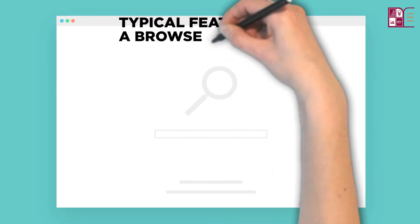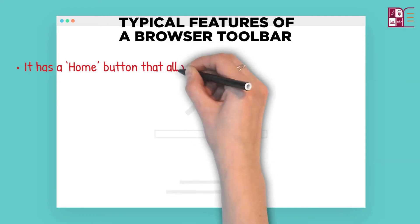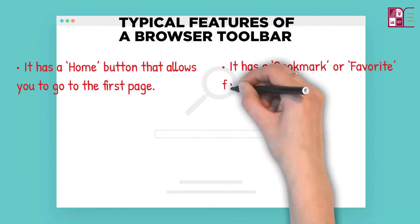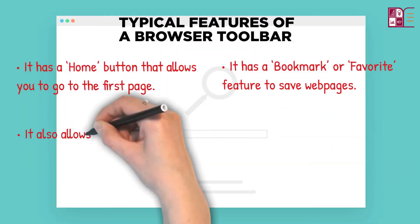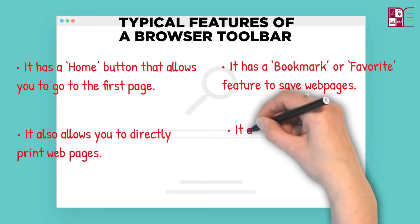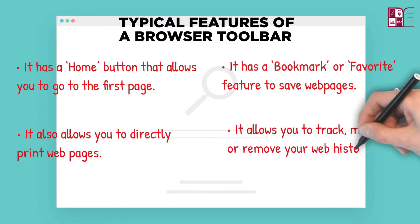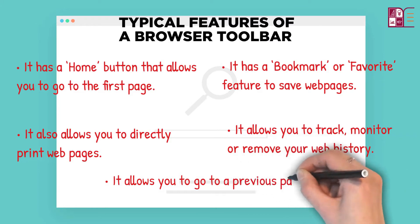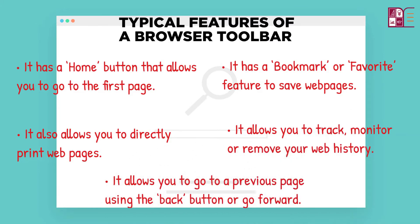Typical features of a browser: It has a home button that allows you to go to the first page you started with. It has a bookmark or favorites feature that allows you to save web pages to access them later. It also allows you to directly print web pages, track, monitor, or remove your browsing history, and go to a previous page using the back button or go forward.